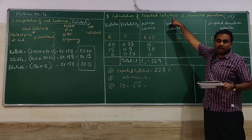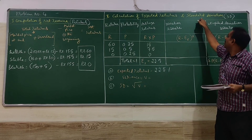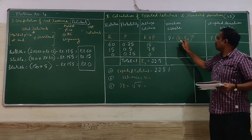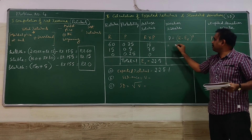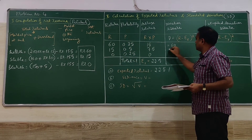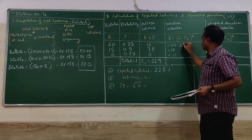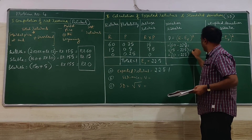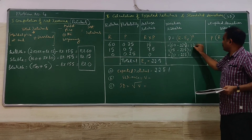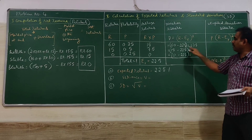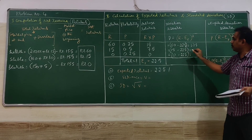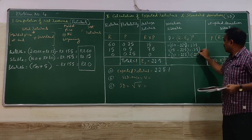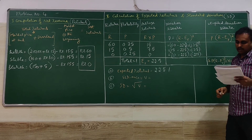Now we find the standard deviation, or variability. The formula is: V = (R − ER)². We substitute the returns 60, 15, and 0 minus the expected return of 22.5 for each: 60 − 22.5 = 37.5, then 15 − 22.5 = −7.5, and 0 − 22.5 = −22.5. We then square these deviation values.